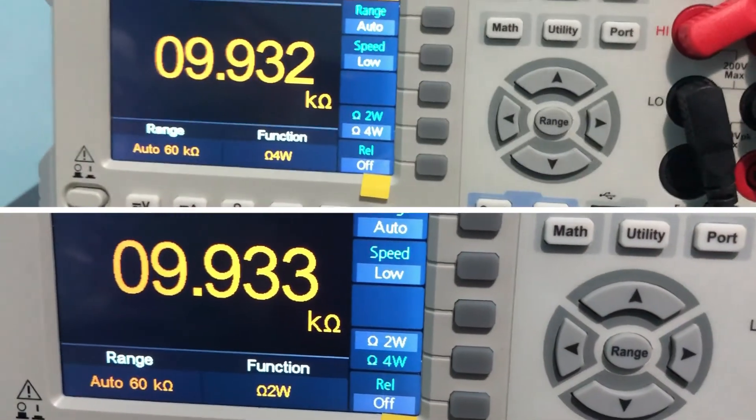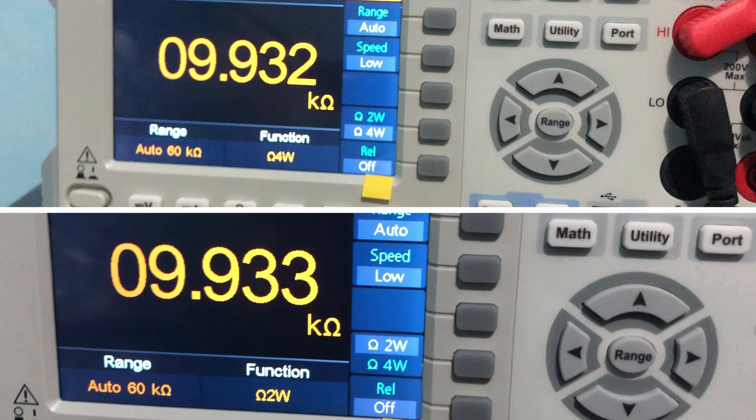For 4-wire measurement, connect another two test leads in high and low sense terminals. You can see there is a 1 ohm difference in the measurement.